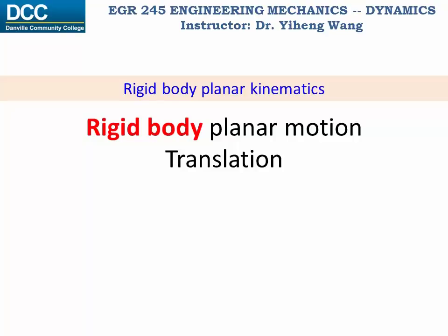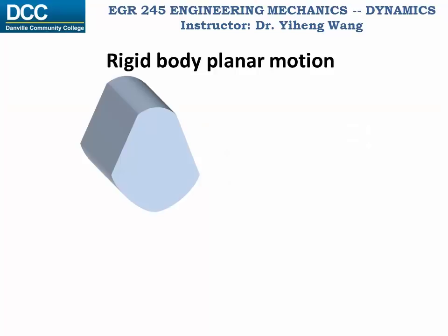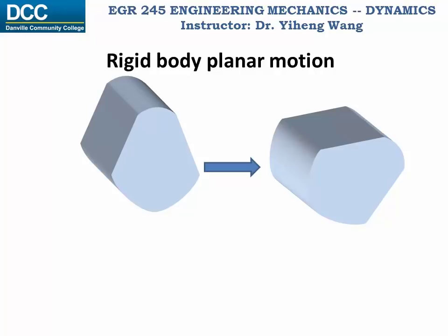With this video we start the study of rigid body planar kinematics. By kinematics, if you recall, we mean that for now we only focus on the geometric aspects of motion. Rigid body motion by nature is more complicated than particle motion, because it involves not only translation but rotation as well. For now we only focus on planar motion instead of three-dimensional motion.